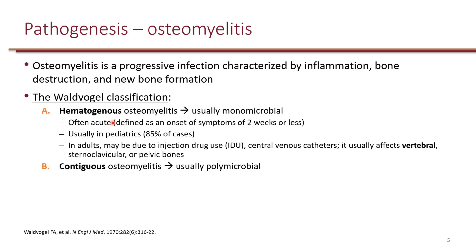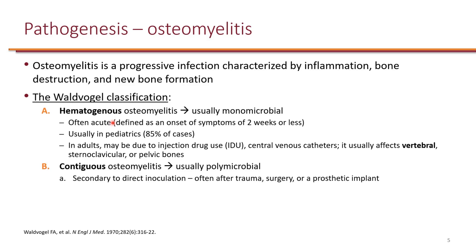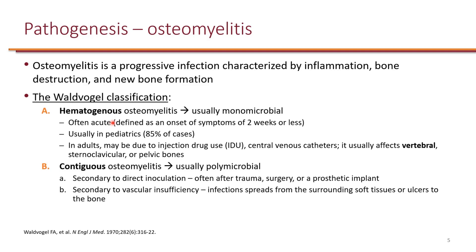In adults, hematogenous osteomyelitis could be due to injection drug use or central venous catheter, and it usually affects the vertebra, which we refer to as vertebral osteomyelitis. For contiguous osteomyelitis, which is usually polymicrobial, it is either secondary to direct inoculation — often after trauma, surgery, or prosthetic implant — or it could be secondary to vascular insufficiency, especially spreading from surrounding soft tissue or ulcers to the bone. This is common in diabetic foot infection.